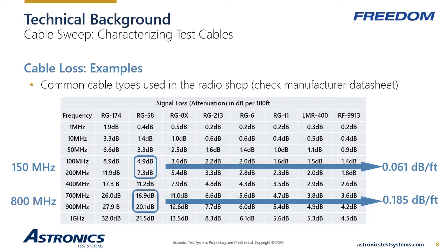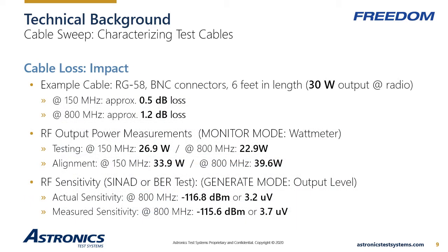At 150 MHz, the average cable loss is between the 100 and 200 MHz values, so we average 4.9 and 7.3, giving us 6.1 dB loss per 100 feet, or 0.061 dB per foot. At 800 MHz, we average 16.9 and 20.1, which gives us 18.5 dB of loss per 100 feet, or 0.185 dB per foot. For a six-foot cable, this attenuates the signal by half a dB at 150 MHz and 1.2 dB at 800 MHz.